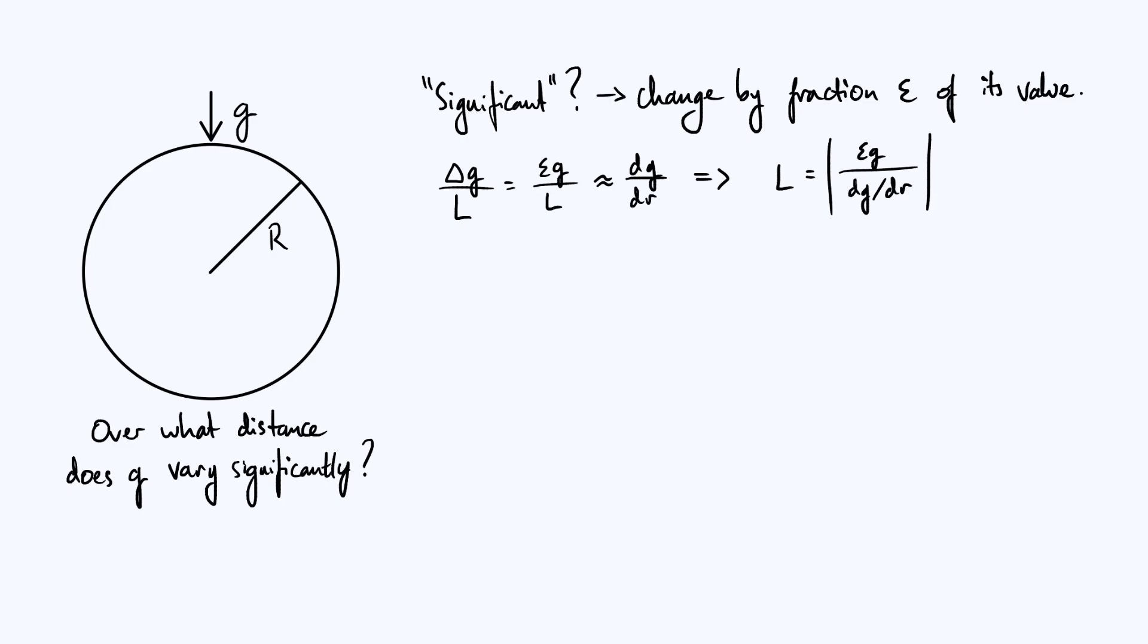Now we know both g and dg by dr because g follows an inverse square law. So we can write down that g is minus GM over r squared, standard expression for gravitational field when you've got spherical symmetry, and then we just differentiate this to find dg by dr.